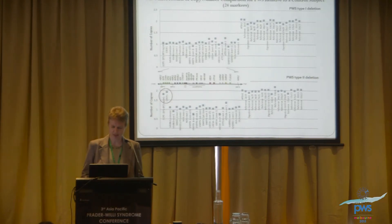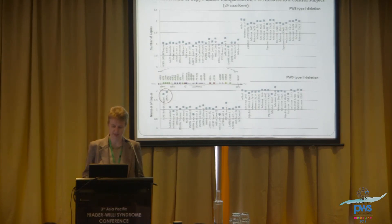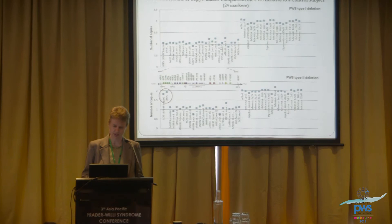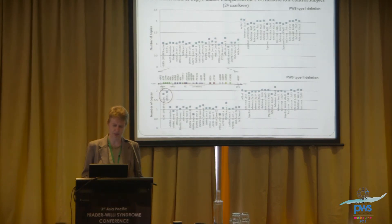This is a busy slide, but essentially it shows Type 1 deletion on top and Type 2 deletion below. This is the expanded q11 through q13 region on chromosome 15. In Type 1, between breakpoint 1 and breakpoint 3, you lose all of these genes and have only one copy number. Other chromosomal regions show two copy numbers, confirming only this portion is deleted. Type 2 deletion is identical to Type 1 except there is a small region between breakpoint 1 and breakpoint 2 that is conserved.